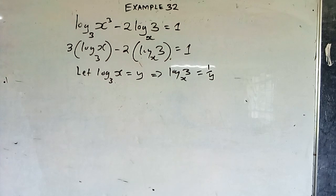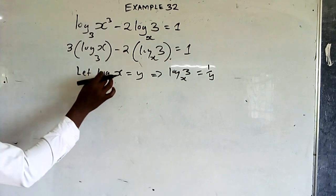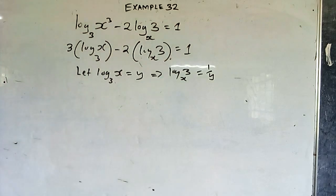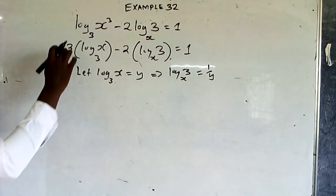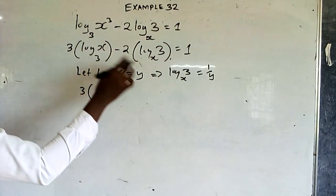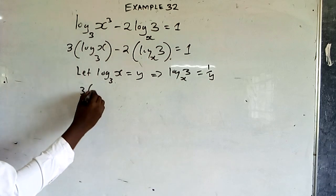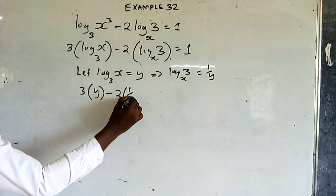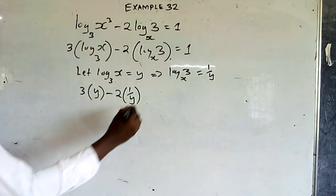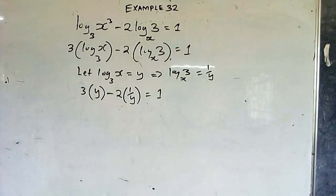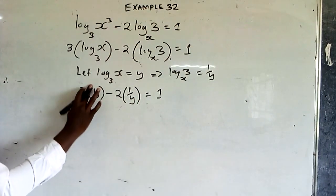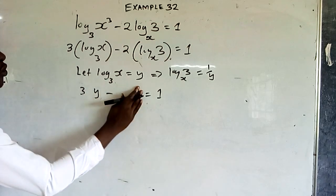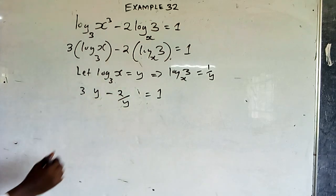Now substitute: where we have log x to base 3, put y; where we have log 3 to base x, put 1 over y. So we get 3·y minus 2·(1 over y) equals 1, which gives 3y minus 2 over y equals 1.